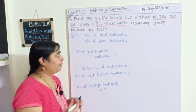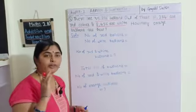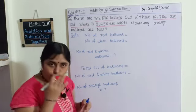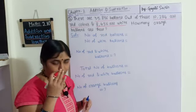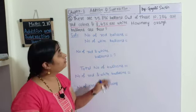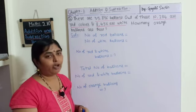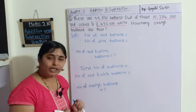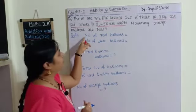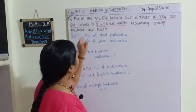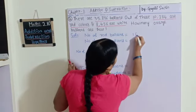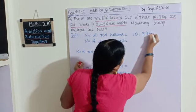We need to add the number of red balloons and the number of white balloons, and when we find that sum, we subtract it from the total number of balloons to find the total number of orange balloons. Number of red balloons: 10284, and number of white balloons: 8456.